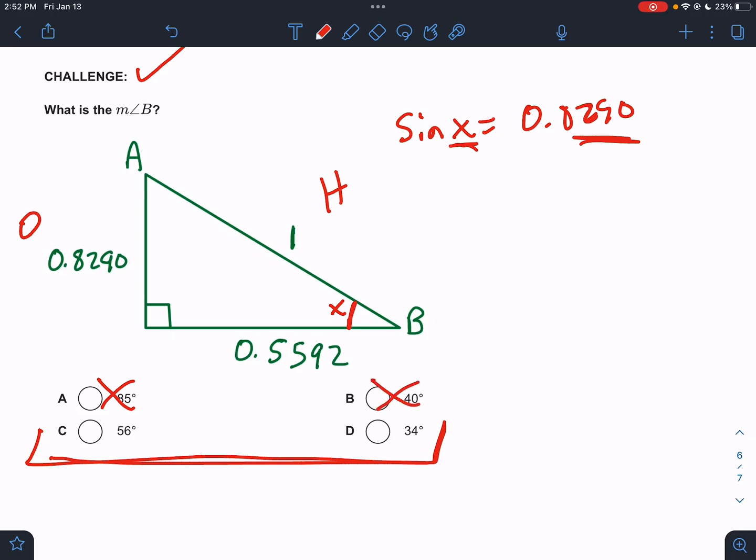I type in the sine of 56. I get 0.8290. Oh, that one's looking pretty good. Let me try the last one real quick. Sine of 34. I get 0.5592. This is the only one that fit this. We know that has to be true. We know that the sine of this angle has to equal this divided by one.